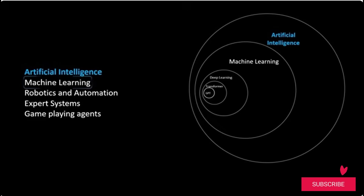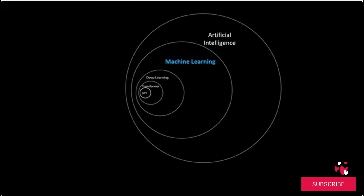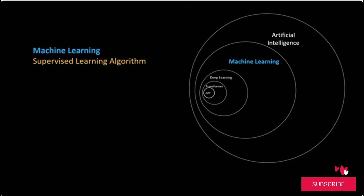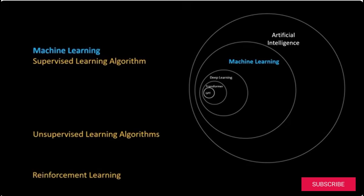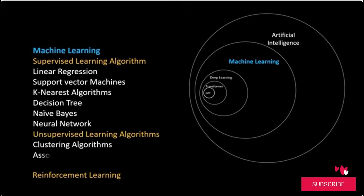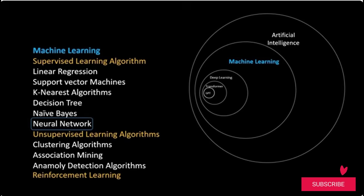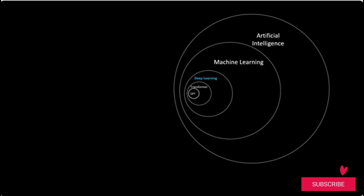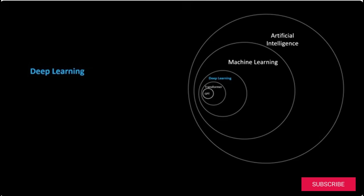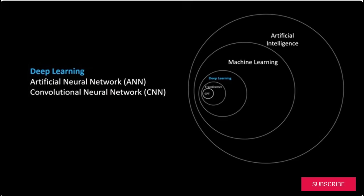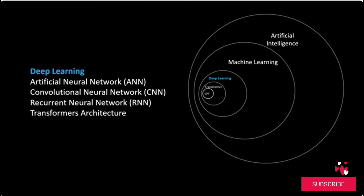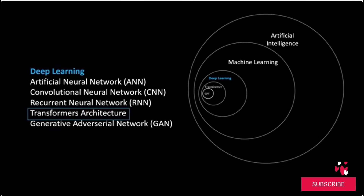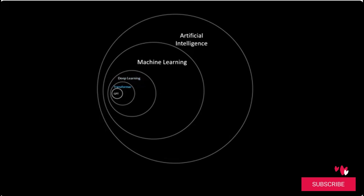We are particularly interested in machine learning. In machine learning, we have three major categories: supervised learning, unsupervised learning, and reinforcement learning. There are many algorithms in these categories. Among these, neural networks are what power large language models. Deep learning is a specialized field in ML that uses deep neural networks, including artificial neural networks, convolutional neural networks, recurrent neural networks, transformer architecture, and generative adversarial networks. For LLMs, the transformer architecture is the key component.